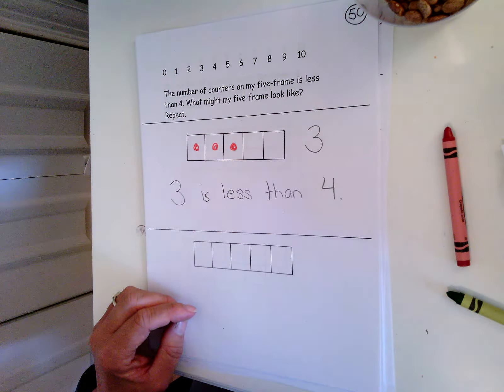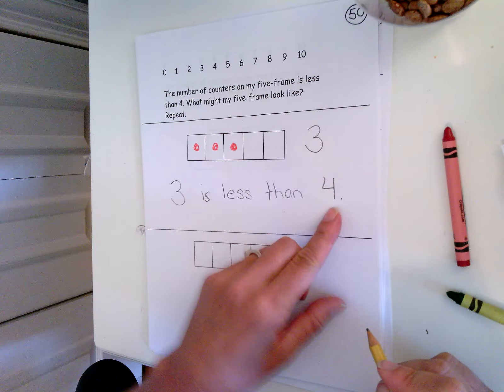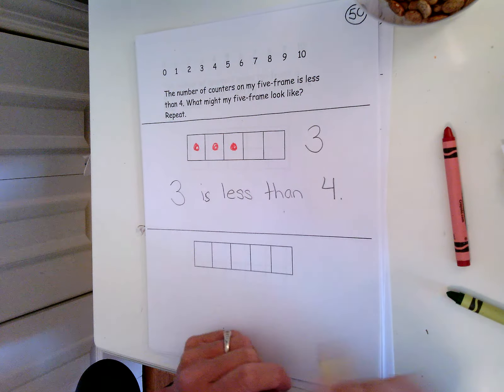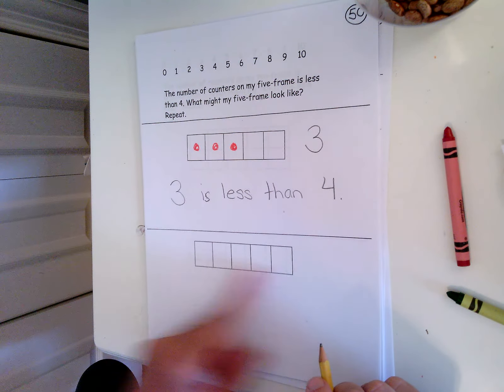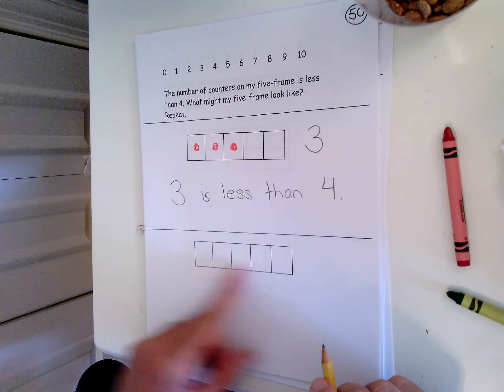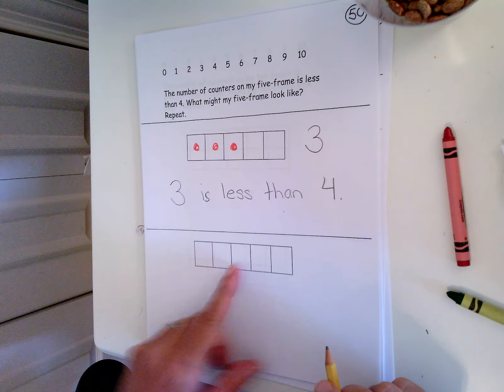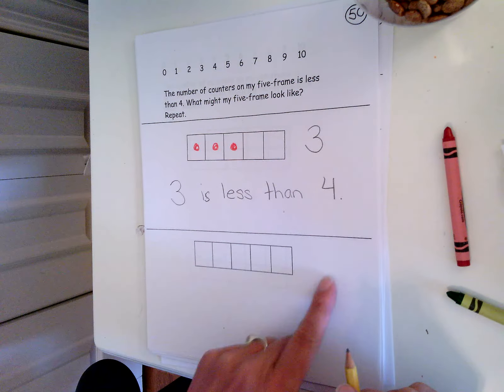You don't have to write the words, but you do need to write the number that's less than four. Now there's other numbers that are less than four. I want you to think of one on your own and draw it and write it. All right, good job.